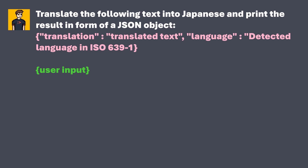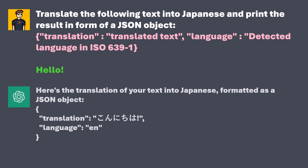If the user enters 'Hello' into the input field, the following prompt is then sent to GPT 3.5 via ChatGPT, and we get the following answer: 'Here is the translation of your text into Japanese formatted as a JSON object.' As you can see, we have the translation 'Konnichiwa' inside the JSON object.